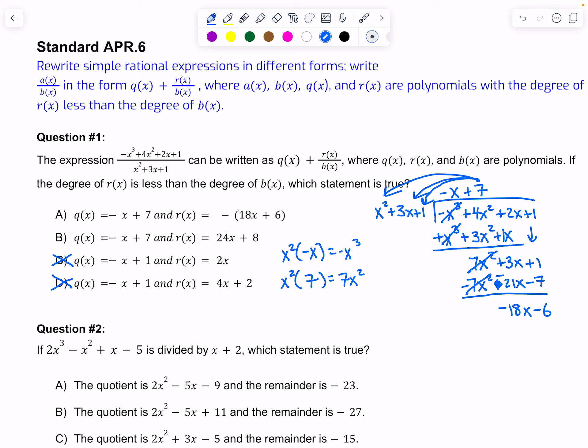But now I can't multiply x squared to get something smaller. X squared times something would not give me negative 18x because that's a smaller term. So this is my remainder. They've just written it differently, taking out the negative and putting it out front. So my answer would be A.